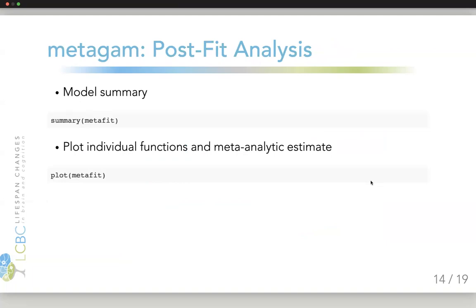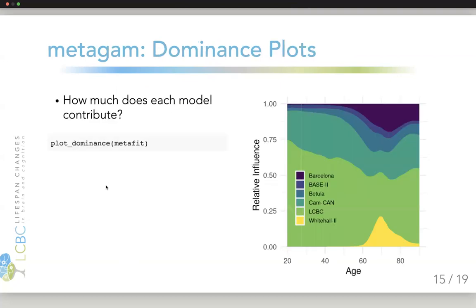The metagon package also supports post-fit analysis. We have a summary function and a plot function, as most modeling packages in R do. And we also have something called dominance plots, which we can call by plot dominance. It shows how much each study contributes to the overall meta-analytic fit as a function of some predictor variable of interest.